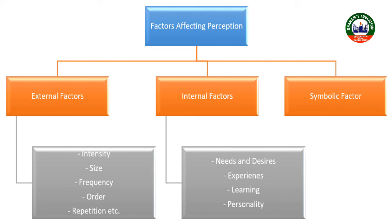Perception is the organization, identification, and interpretation of sensory information in order to represent and understand the presented environment. All perception involves signals that go through the nervous system, which in turn result from physical or chemical stimulation of the sensory system. For example, when a mosquito bites you, you start scratching your skin, and even after the bite is gone you may still scratch — that is because your sensory nervous system quickly sends information to the brain that something happened to your skin.